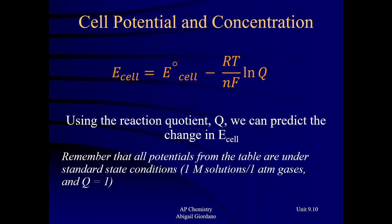Using that reaction quotient Q, we can predict what's going to happen to the voltage of a galvanic cell if some part of the conditions are not under standard state. When we are under standard state — all gases at one ATM, all aqueous solutions at one molar — Q is always equal to one.